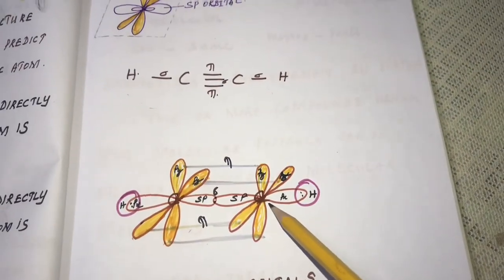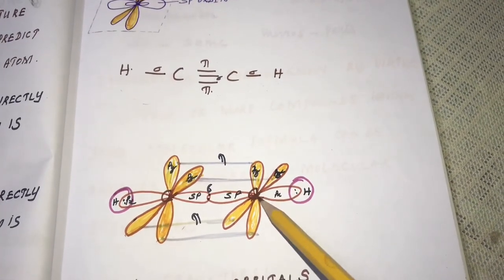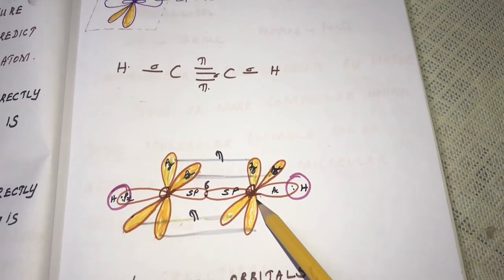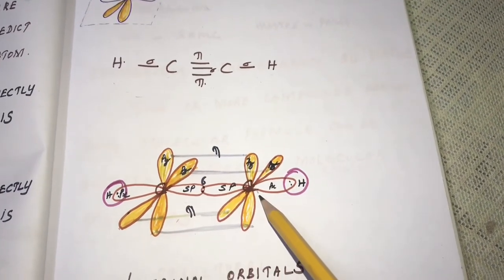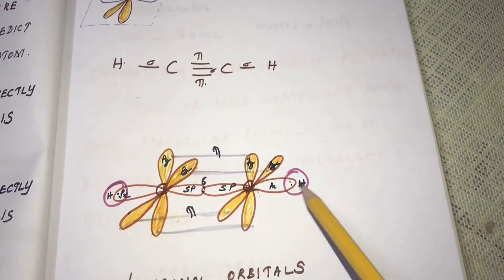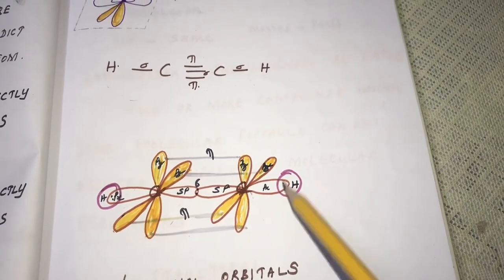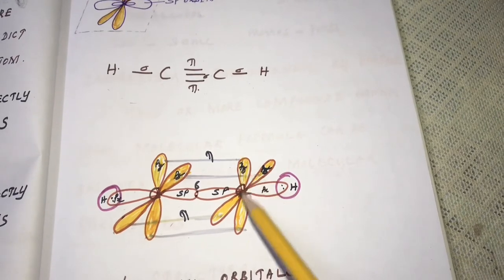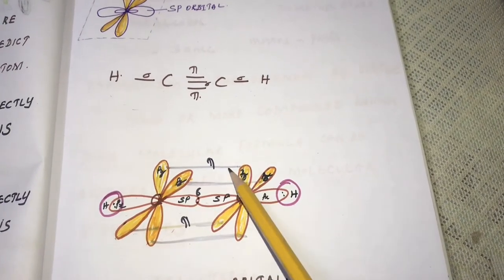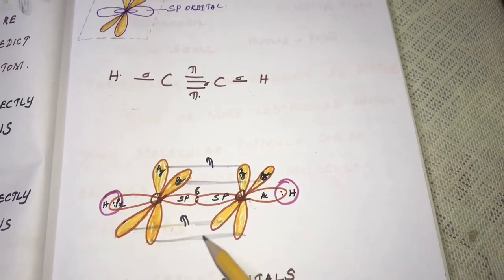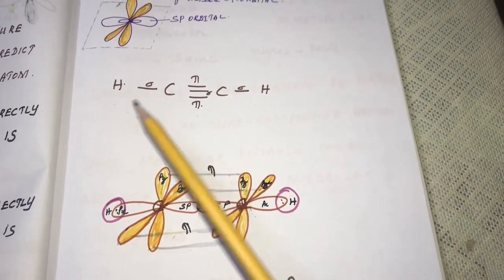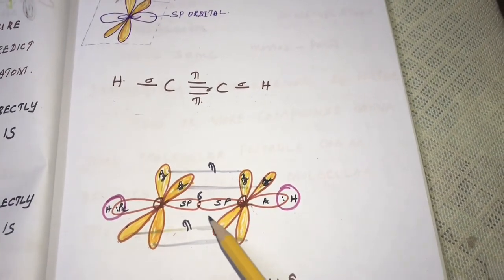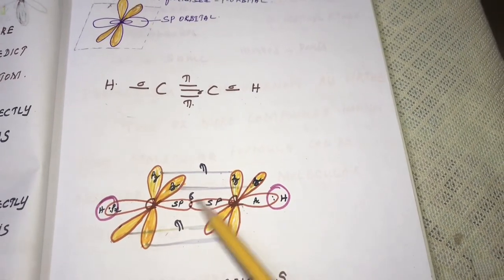In ethyne (acetylene), the carbon is sp hybridized with diagonal orbitals. The first carbon's sp orbital overlaps head-on with the sp orbital of the second carbon forming a sigma bond. The unhybridized py and pz orbitals overlap sideways, each forming a pi bond — accounting for a total triple bond in acetylene. On both sides, the sp carbon overlaps with the 1s orbital of hydrogen forming a sigma bond. The bond angle in acetylene is 180°.